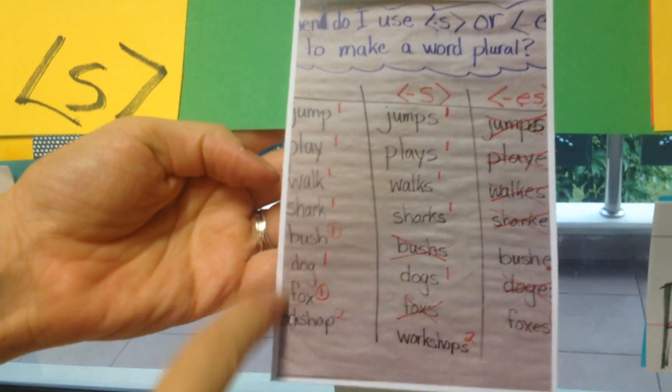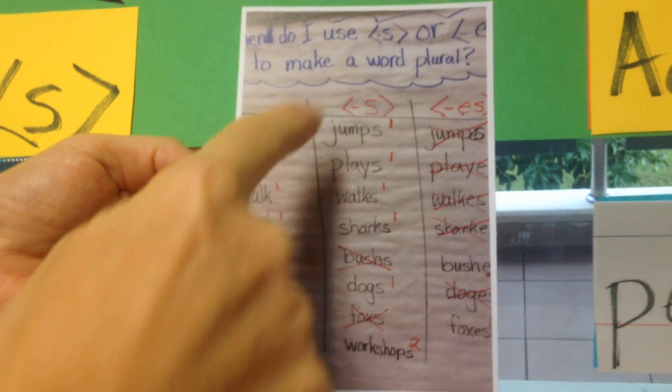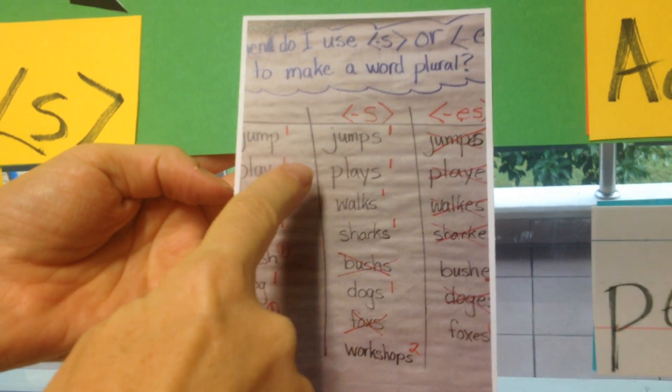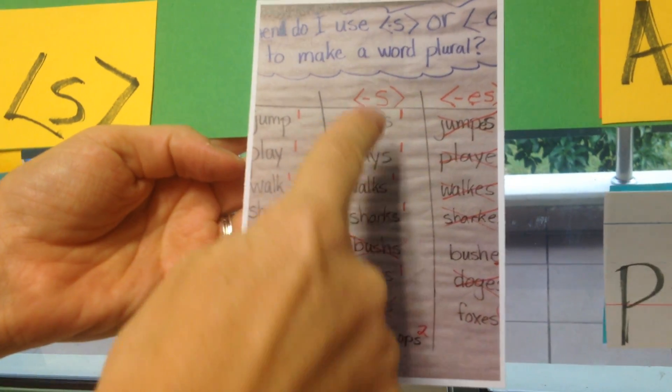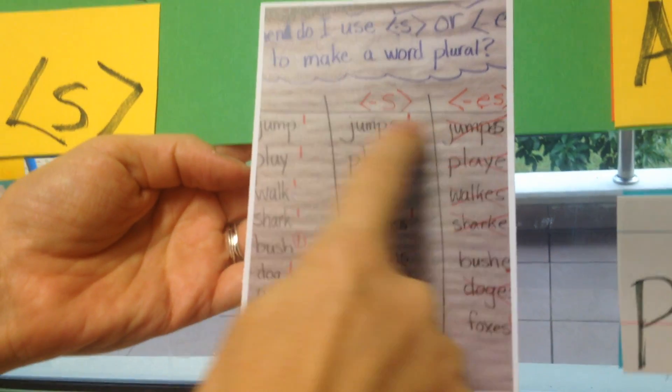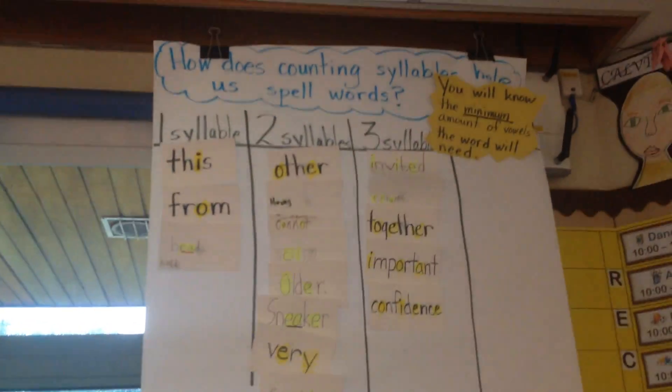We looked a lot at what happens when you have a base and then you make it plural. We looked at syllables, but it was based on that first — we had to figure out about syllables. And then from that, we developed just this simple flowchart.